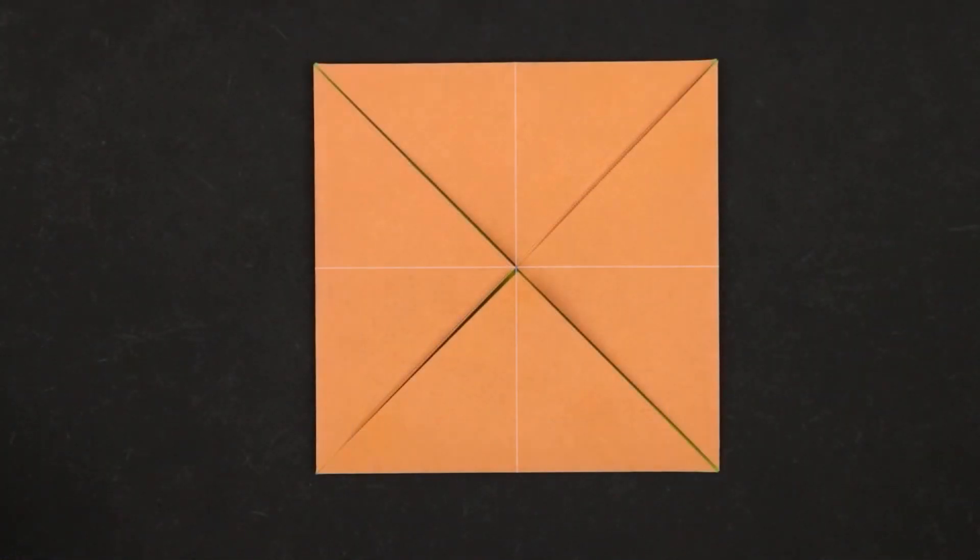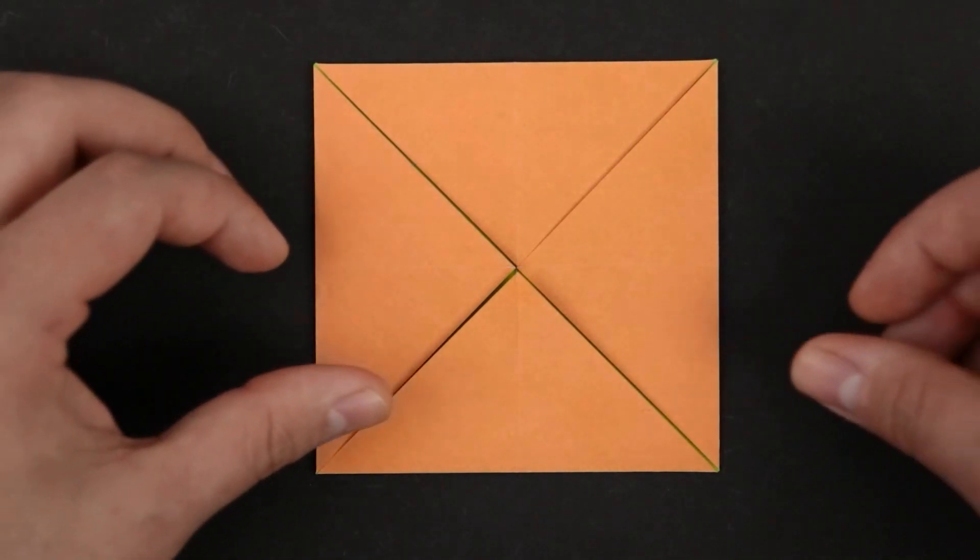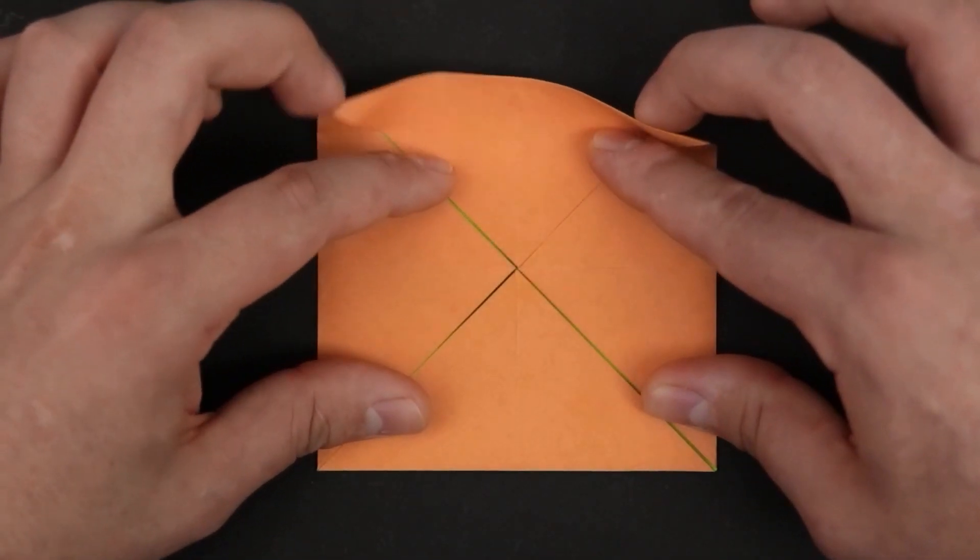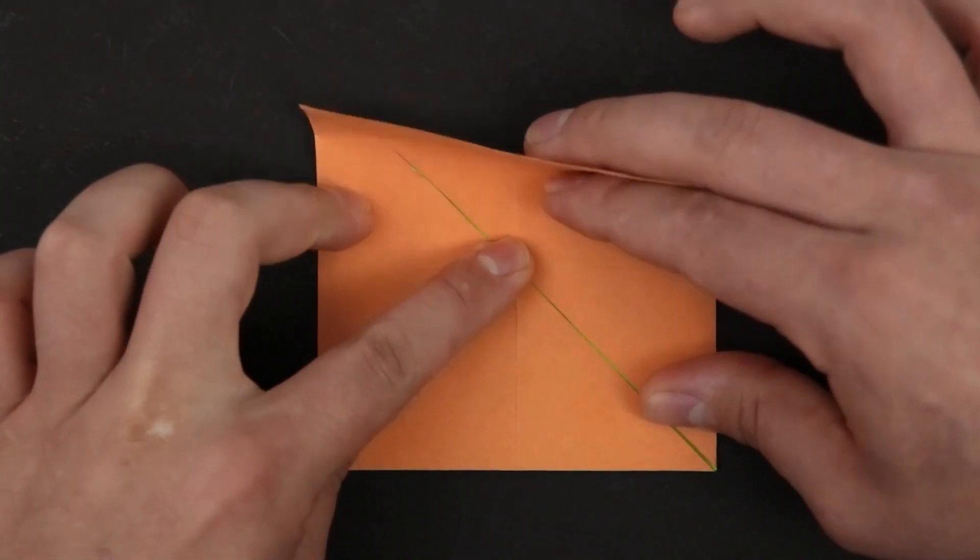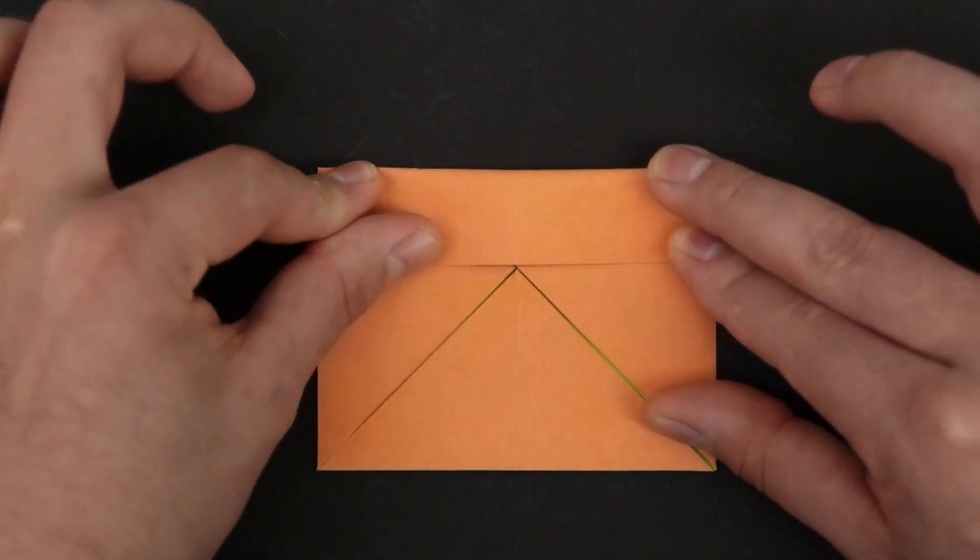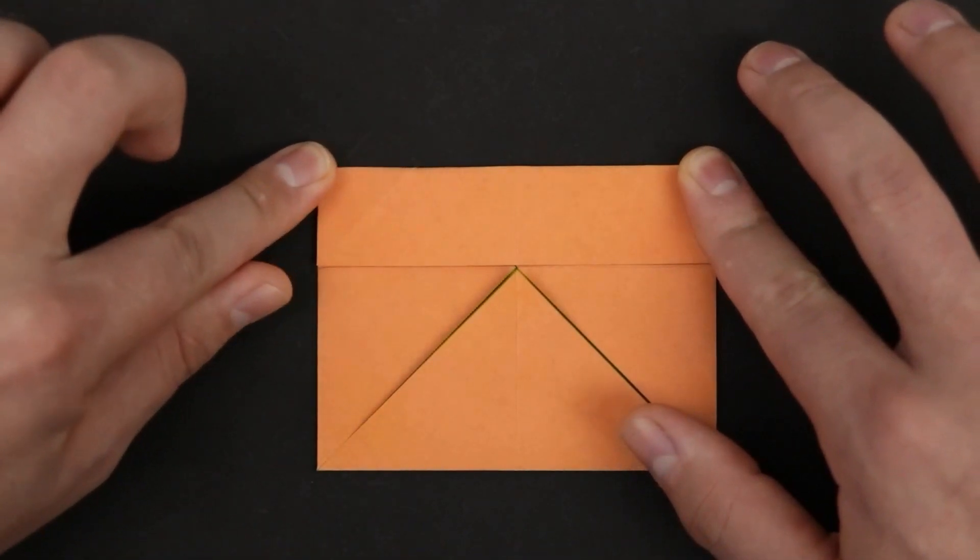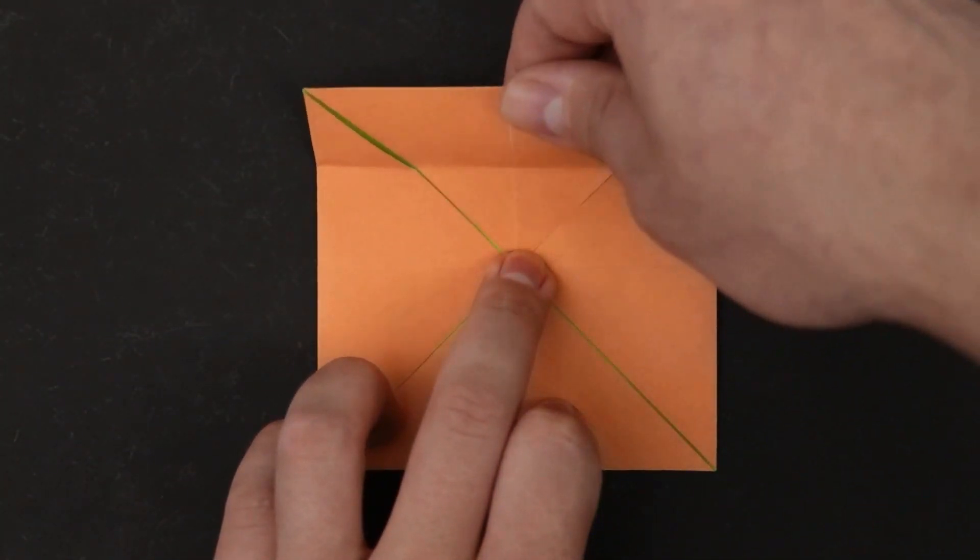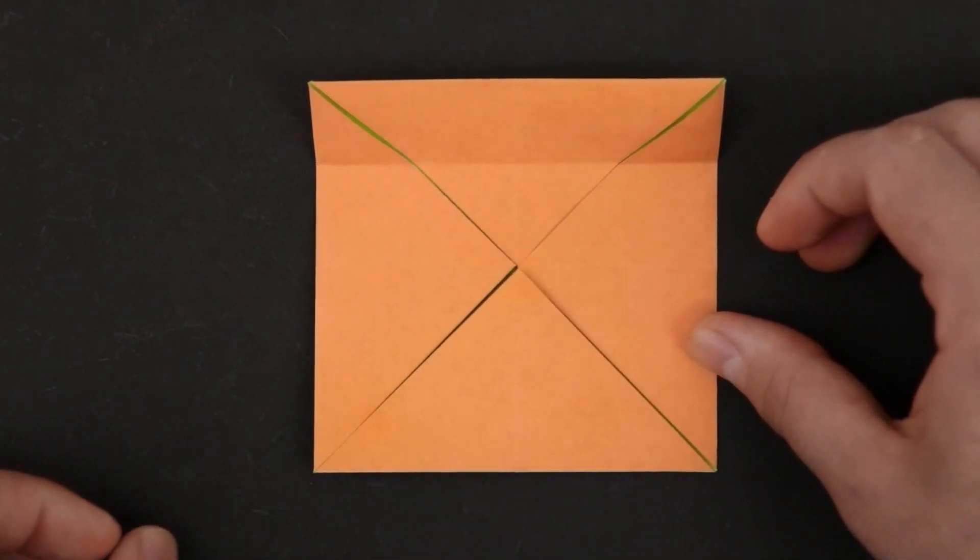And now let's fold to the middle, the top and bottom side. Bring it carefully so that the paper doesn't slide. Align very well. And make a crease. Unfold. And repeat on the other.